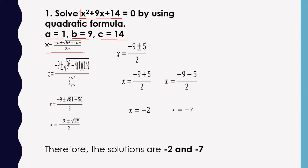x equals negative b plus or minus square root of b squared minus 4ac, all over 2a. So we have x equals negative 9 plus or minus square root of 9 squared minus 4 times 1 times 14, all over 2 times 1. Performing the operations: 9 squared equals 81, and 4 times 1 times 14 equals 56.